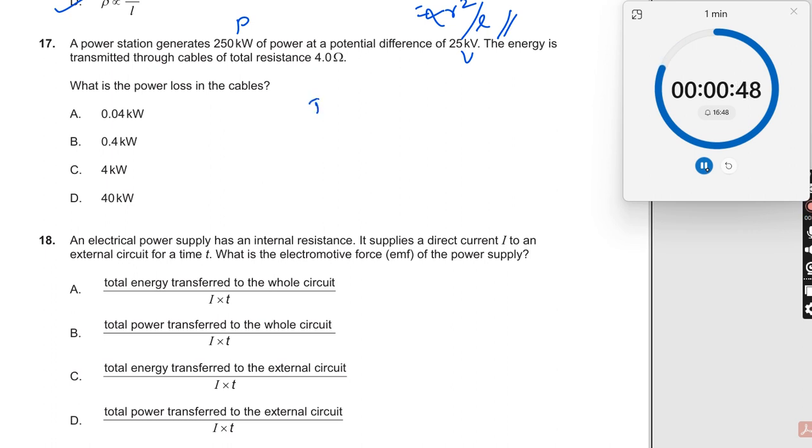Current is nothing but equal to power divided by voltage. Why? Because P is equal to V into I, right? So from here what do I get?